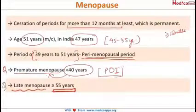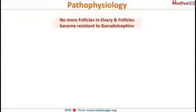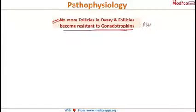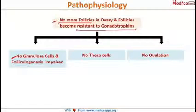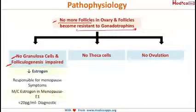In menopause, the number of eggs in the ovary decreases. There will be no more follicles, and the follicles which are left become resistant to gonadotropins — resistant to the action of FSH and LH. As a result, there are no granulosa cells, the remaining follicles will not grow, and folliculogenesis will be impaired.